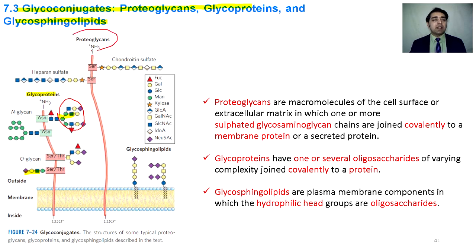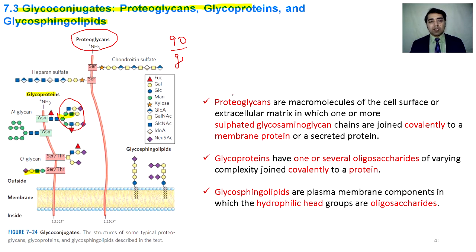In proteoglycans, almost 90 percent of the molecule consists of the glycan component. They have one transmembrane protein attached with one or more glycan components, which are sometimes highly sulfated like chondroitin sulfate or heparin sulfate. Proteoglycans are macromolecules of the cell surface or extracellular matrix in which sulfated glycosaminoglycans are covalently joined to a membrane protein. Glycosphingolipids are oligosaccharides joined to sphingolipids on the cell membrane.